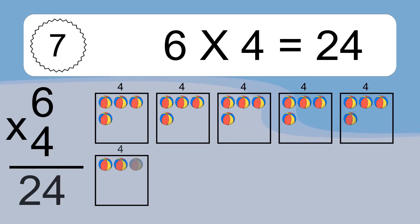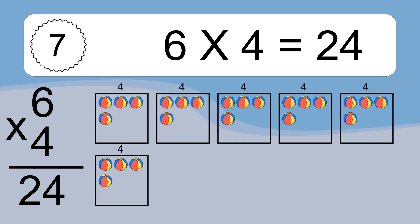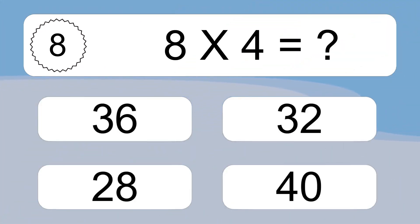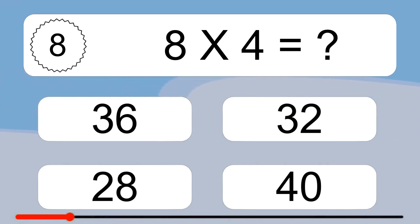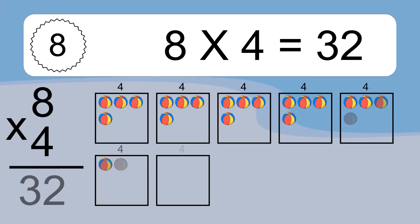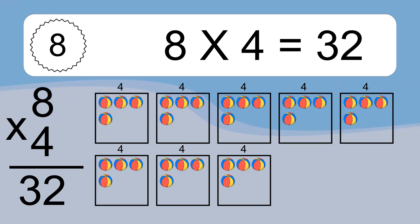6 times 4 equals what? 6 times 4 equals 24. 8 times 4 equals what? 8 times 4 equals 32. We have 8 boxes and each box has 4 colorful balls inside. If you count all the balls in all the boxes together, you will have 8 times 4 balls. This equals 32 balls.